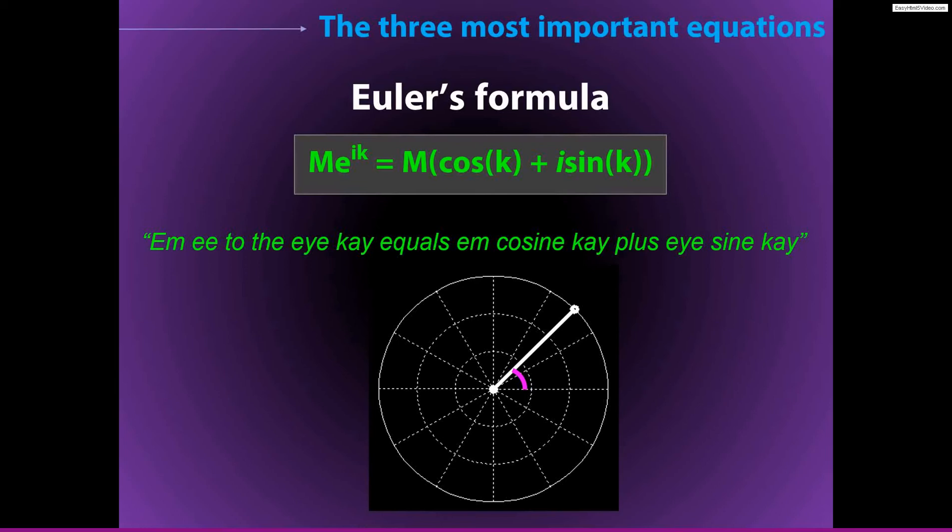Euler's formula allows us to represent two pieces of information as a vector or as a line. We have m, which is the length of this line, so the distance away from the origin.